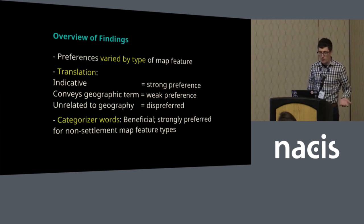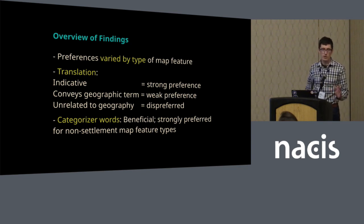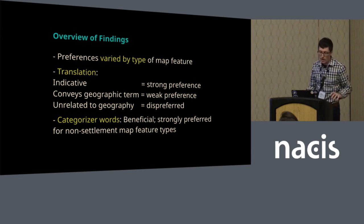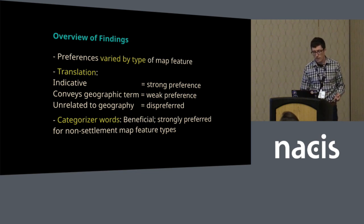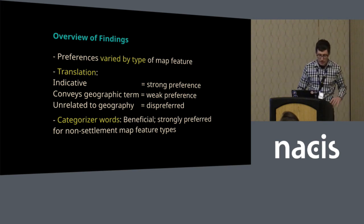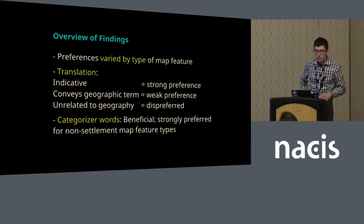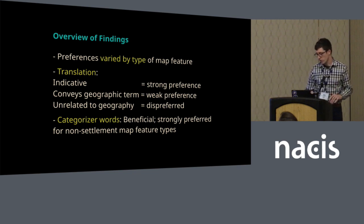Preferences did indeed vary by type of map feature. With regard to translation, speakers seemed to prefer translation when it accurately indicated the type of place being shown. There was a weak preference for translation when it conveyed some sort of geographic term — something like park, even when it refers to a town or neighborhood. And when the translation was unrelated to geography, it was dispreferred. Categorizer words like mountain, restaurant, and bar were generally beneficial and strongly preferred for non-settlement map feature types.